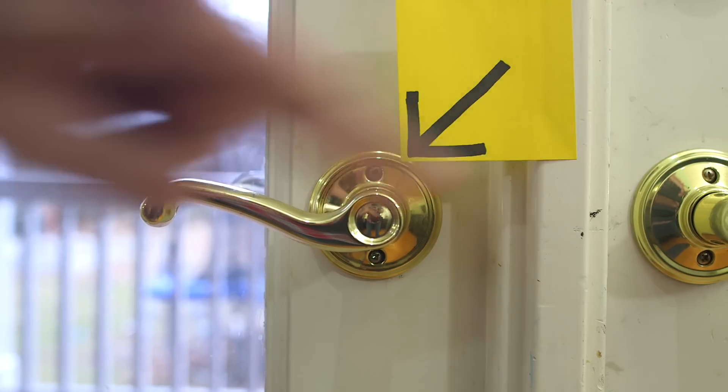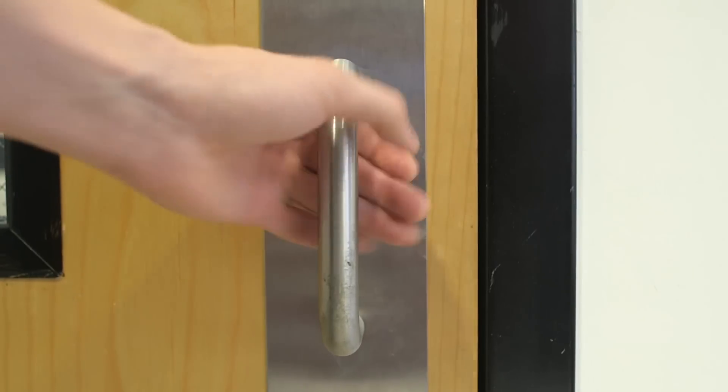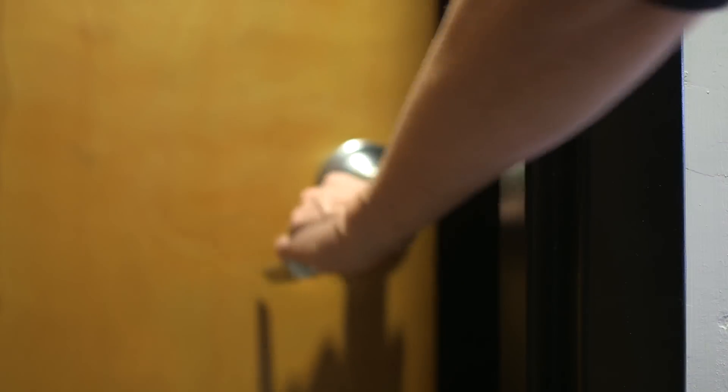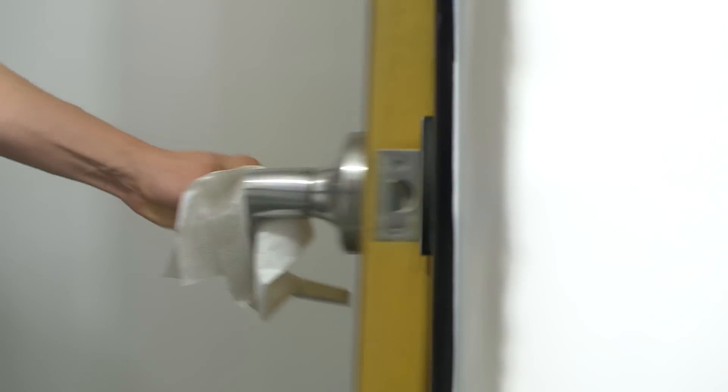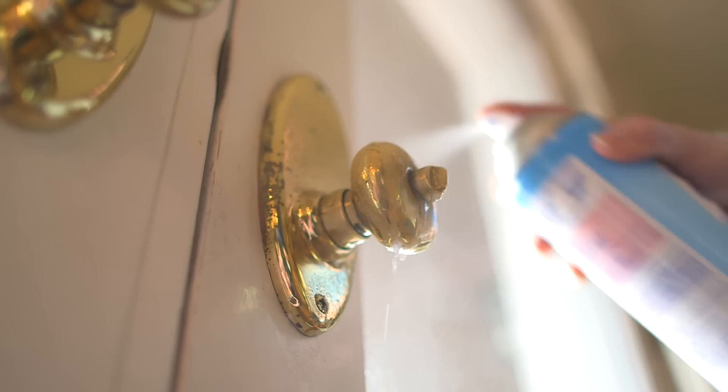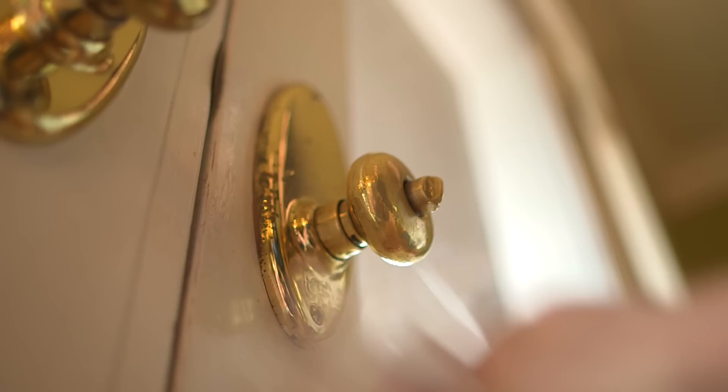The fifth germiest place, door handles. It makes sense. Lots of hands, lots of touches, lots of germs. Be mindful to only use your hands when you absolutely have to. Use your sleeve or a paper towel on a door handle whenever possible. At home, clean your door handles frequently and anytime guests have been over.